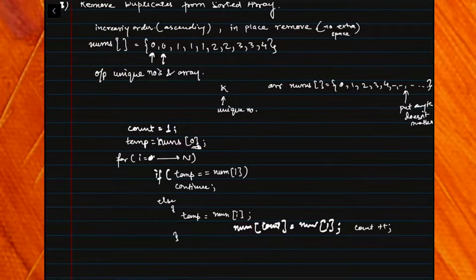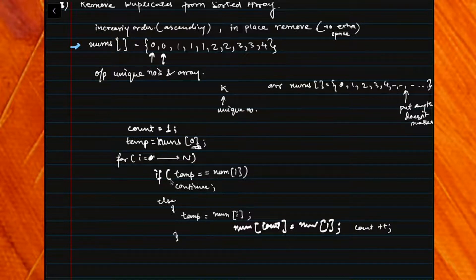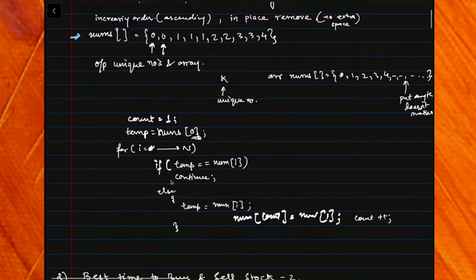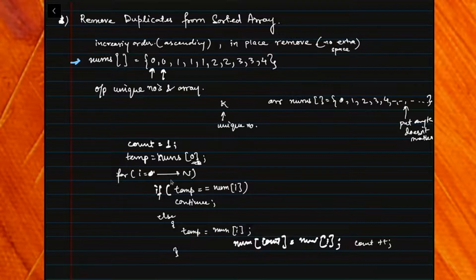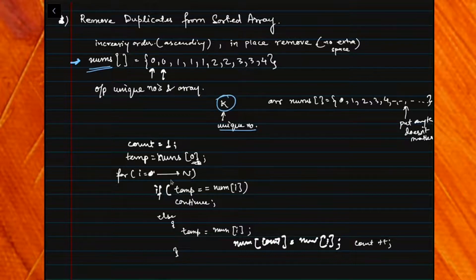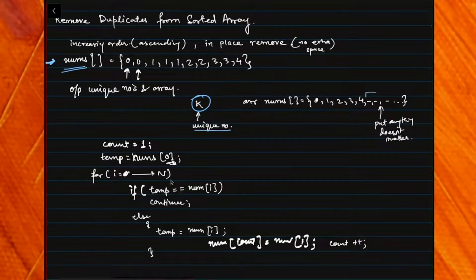I've taken the second example from the question in increasing order. In interviews, they might just give you the problem statement and ask you to build an example satisfying the condition. The output should contain unique numbers, and we need to return the array nums along with k — the count of unique numbers. We don't need to worry about anything beyond the first k elements.